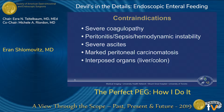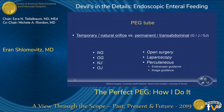Regarding contraindications, really only the first two are absolute contraindications. Ascites and peritoneal carcinomatosis I would say are relative contraindications. I'll show a couple of examples of patients with severe peritoneal carcinomatosis where we were still able to get enteral access. Interposed organs is really a safety issue — you just need to be mindful of that, and I'll show how you can avoid injuring the colon.